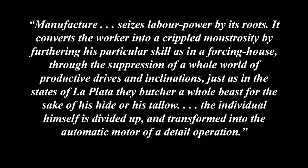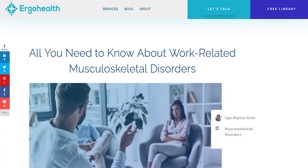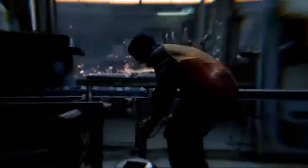Manufacture seizes labour power by its roots. It converts the worker into a crippled monstrosity by furthering his particular skill, as in a forcing house, through the suppression of a whole world of productive drives and inclinations — just as, in the states of La Plata, they butcher a whole beast for the sake of his hide or his tallow. The individual himself is divided up and transformed into the automatic motor of a detailed operation. Marx also notes how this specialization results in injuries, illness, and crippling of the workers, as they force their bodies into dangerous tasks, unnatural movements and positions, and heavy lifting time and time again for their whole lives.